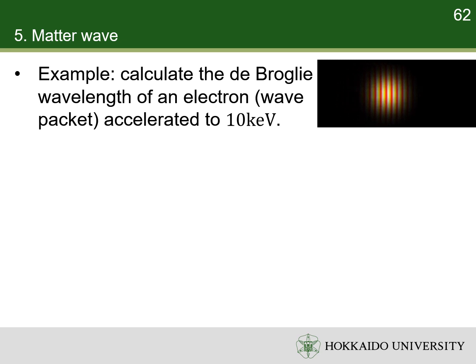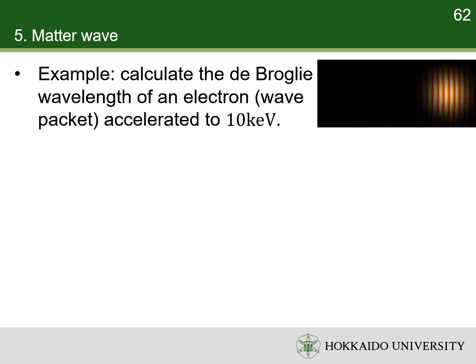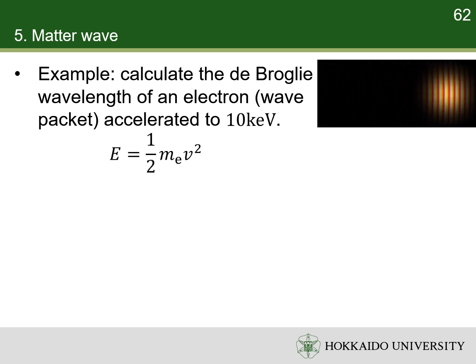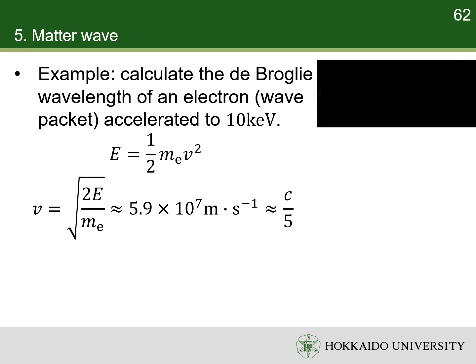Here, I have an example of the calculation of de Broglie wavelength of an electron after acceleration by 10 kV voltage. First, calculate the speed of electron. The result is well below the speed of light, so the relativistic effect can be ignored.